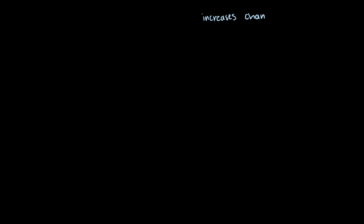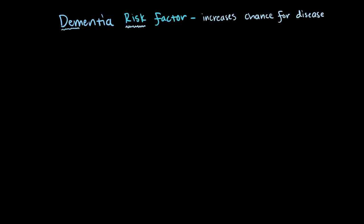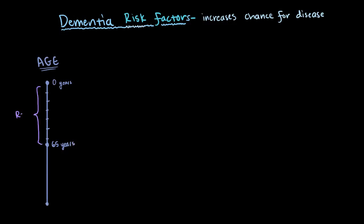When something increases the chance that you'll develop a certain disease, we call it a risk factor, because essentially it increases your risk, or puts you at a higher risk for developing that disease. By far, the most common risk factor for Alzheimer's disease, vascular dementia, and other types of dementia is age. Dementia is very rare in people under the age of 65 years old, but becomes very common after age 80.